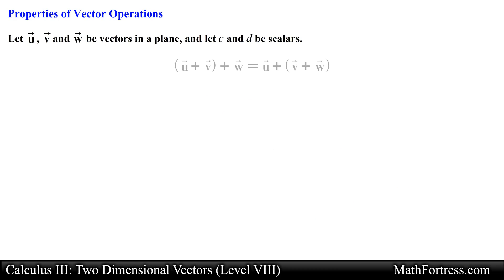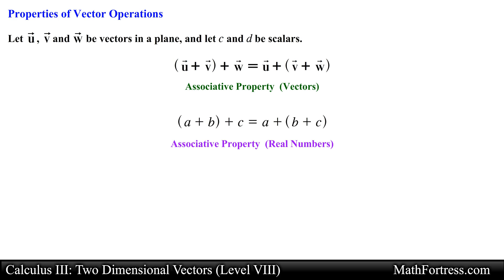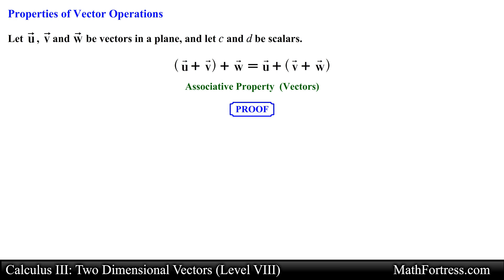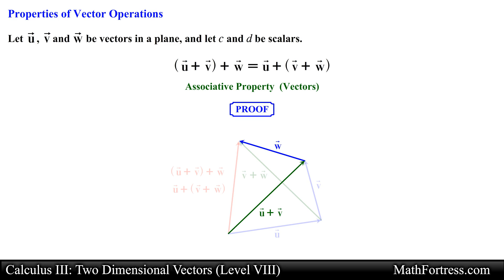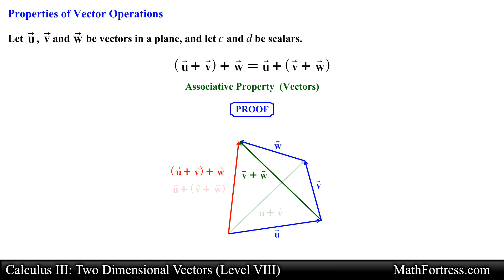Let's take a look at our second property. The sum of vector u and vector v plus vector w is equal to vector u plus the sum of vector v and vector w. This is known as the associative property for vector addition. Similar to the associative property of addition for real numbers, we are free to add vectors in any order without affecting the resulting vector. We can geometrically prove this property using a diagram — notice that the sum of vector u and vector v plus vector w yields the same resultant vector as vector u plus the sum of vector v and vector w.